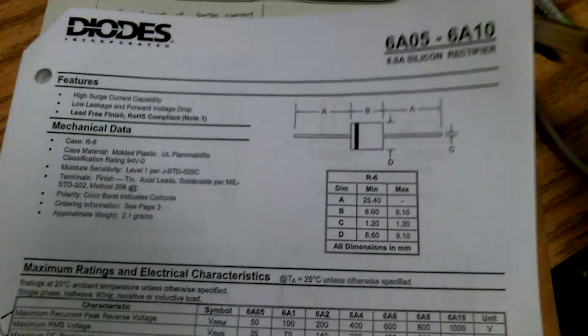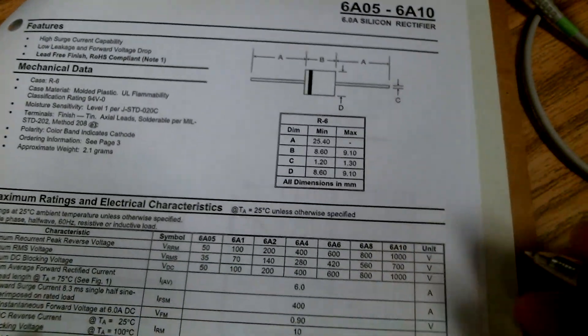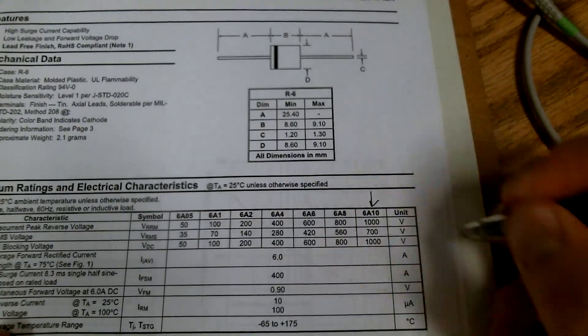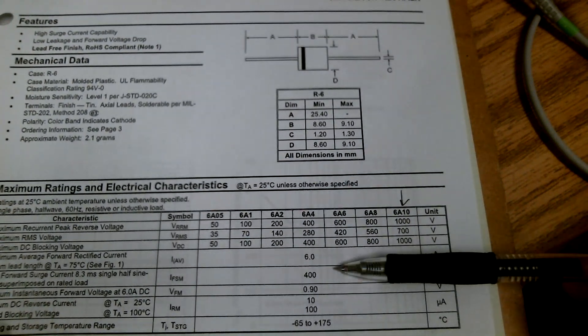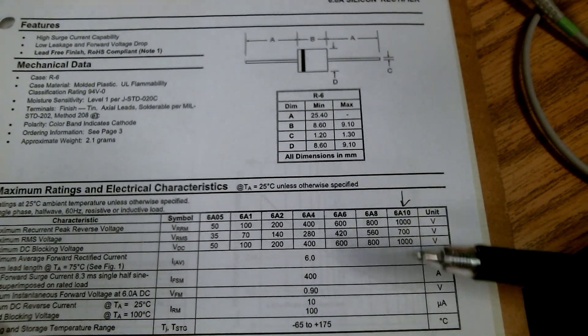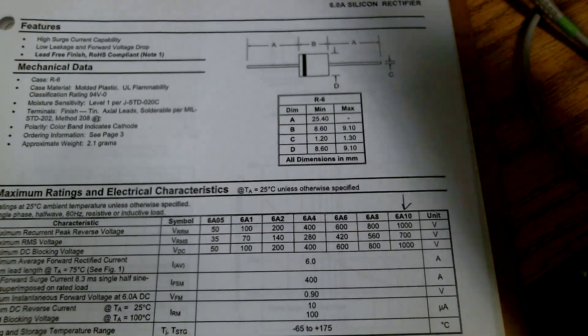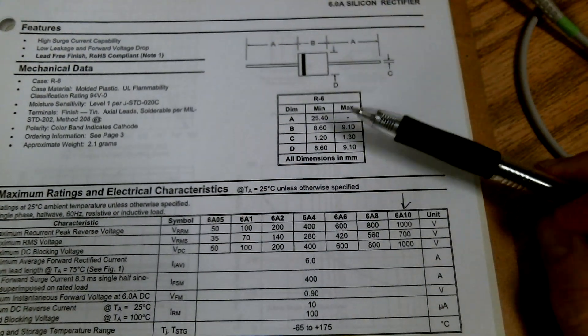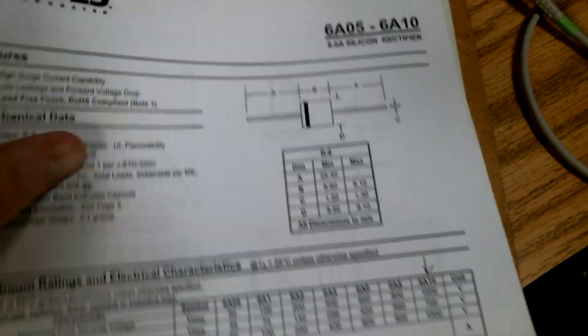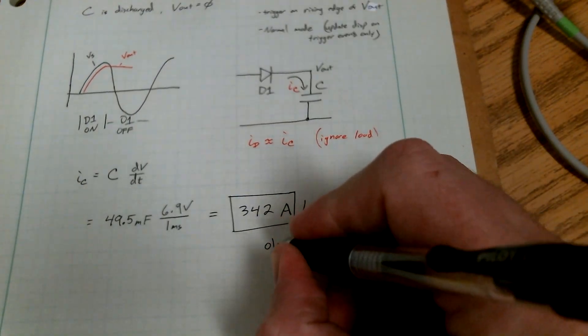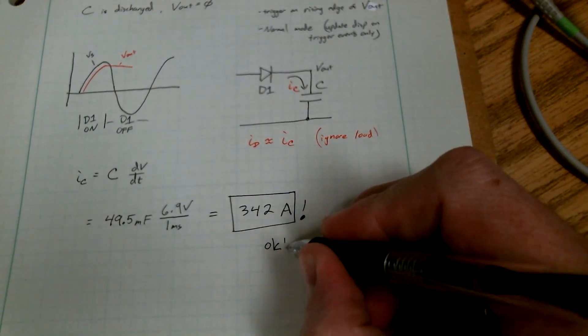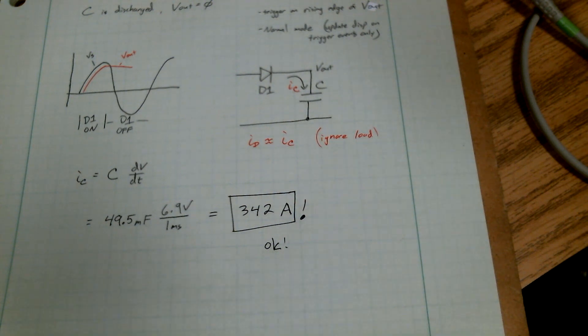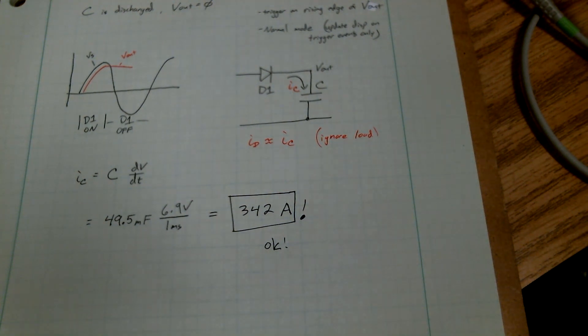The diodes for this is the 6A10. And the surge current is rated at 400 amps. Well, remember, there is eight of these diodes in parallel in our device. So this is okay. And even it's okay if it's just one diode charging up this capacity, which would be bad. But according to the data sheet, at room temperature, these diodes aren't at room temperature. We're good.